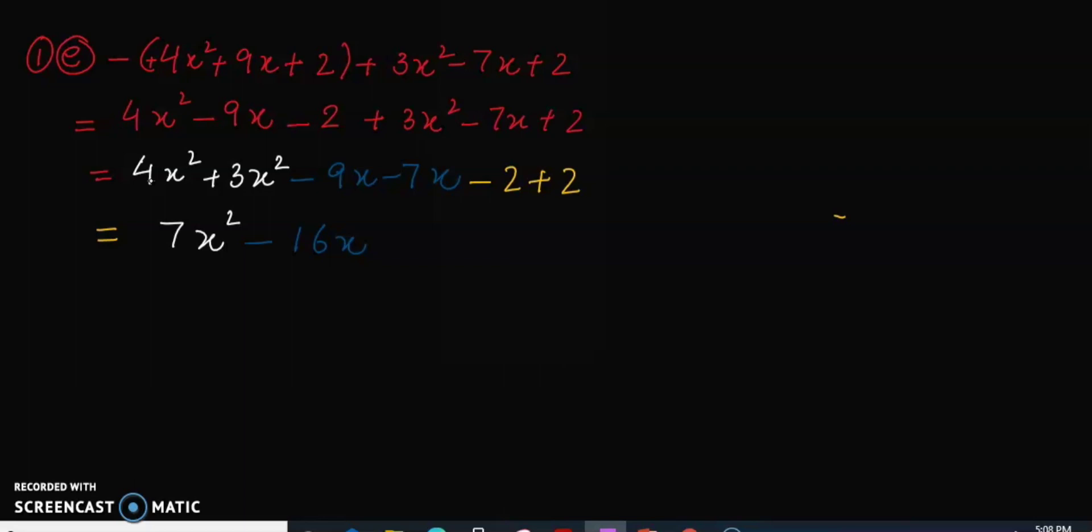Now here we have two different signs, minus 9 and minus 7. So they are actually same signs, so they will be added. Same signs are always added. And with the answer, we have the sign of the bigger number. Now similarly, here you can see that they have opposite signs but same numbers. So technically, if you write them like this, positive 2 and minus 2, then 2 minus 2 is 0. So we have nothing to write over here in this place. So this is our answer.